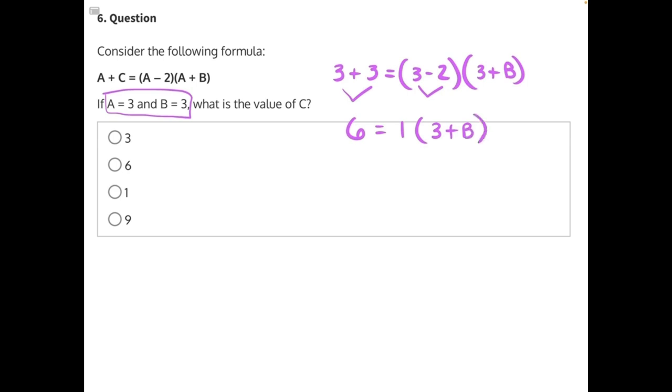Next, we'll need to distribute this 1 into the parentheses. Anything times 1 is just itself, so we will end up with 3 plus B.